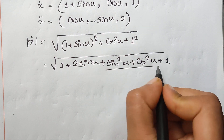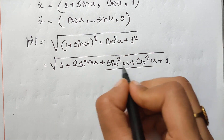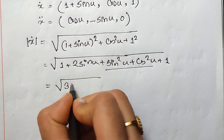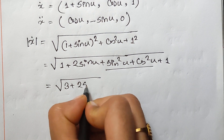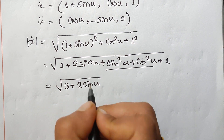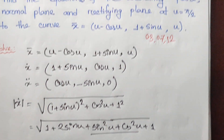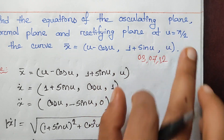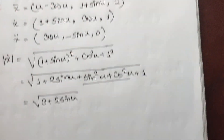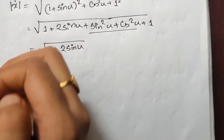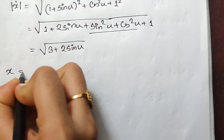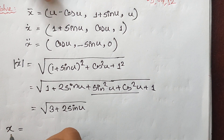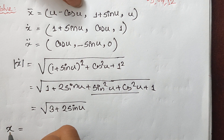Now, lx is equal to higher. x equals higher. So pi by 2 is minus cos pi by 2.